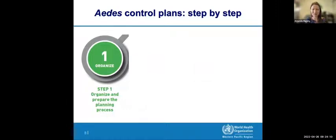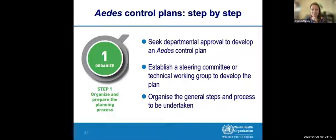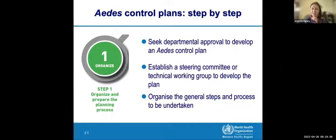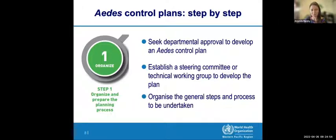Organizing the process is really about thinking about who you want to be involved. You might want to start by talking with senior management to seek approvals to develop a new plan and make sure they're on board from the start. You might want to establish either a steering committee or a working group of the right people, possibly from different departments or sectors. Then organize the general steps expected, including meeting with stakeholders, discussing components, and finalizing approvals.